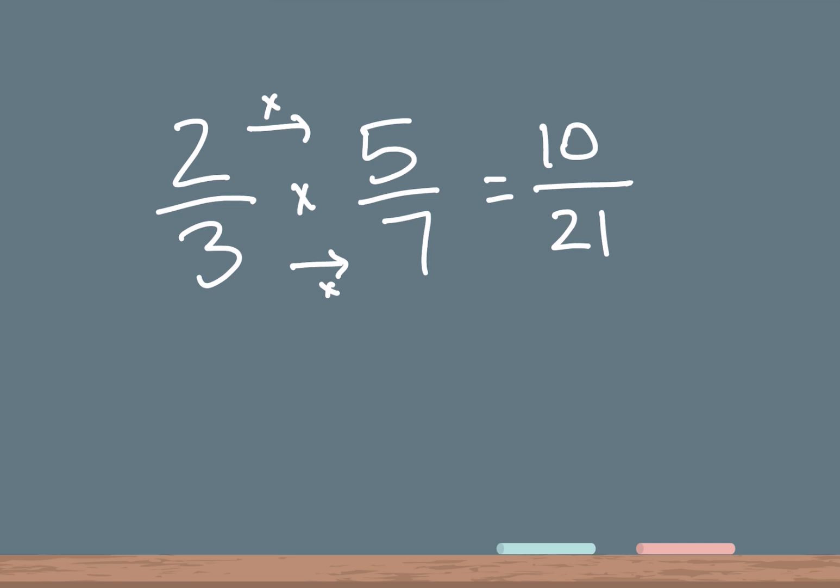So our next step is to simplify. And in order to simplify, you have to find a common factor. So there is no common factor for 10 and 21. So this is in its simplest form. So our answer to our first problem is 10 over 21.